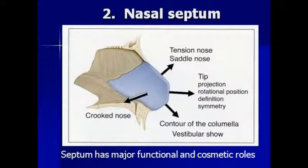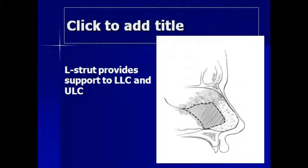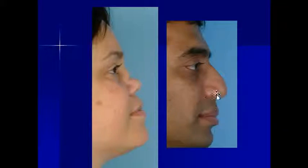The septum has to be preserved in order to maintain strength of the nose — we talk about an L-strut. This portion of the septum on the bridge and this portion down at the base form the so-called L-type configuration, which must be strong by the end of the surgery. If that L-strut is violated, you may have a saddle deformity if the central portion gets depressed, or you may lose tip support if the L-strut at the bottom weakens. Structural rhinoplasty aims to prevent L-strut problems by keeping it strong through structural techniques.